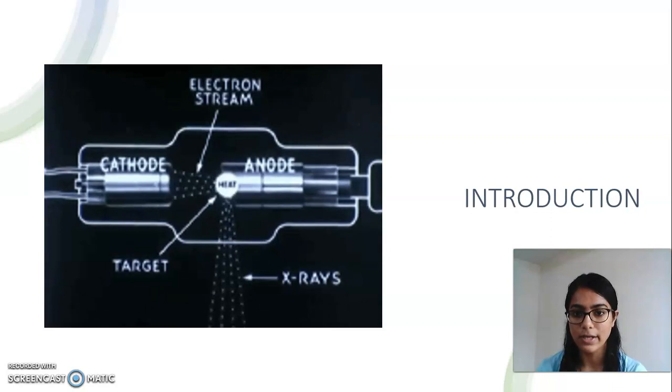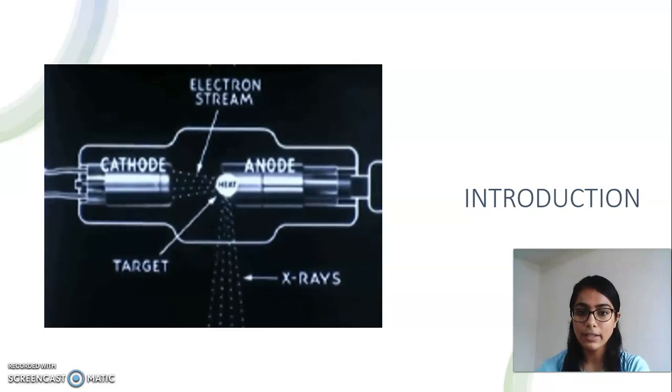Heat is uniformly distributed and accumulated in large target anode. Larger the target anode, the more dissipation of the heat occurs effectively and prevents the further damage caused to the target.